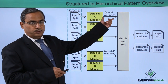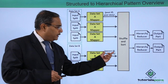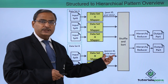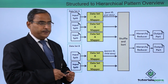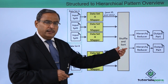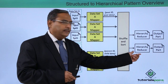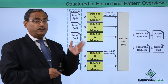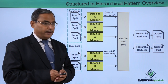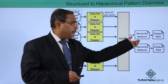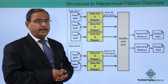The output from the mappers will be in the form of key-value pairs — for example, post ID comma post data, or parent ID comma child data. Then shuffling and sorting will take place, feeding into the hierarchical reducer, which converts the data into the respective hierarchical format. The final output is then obtained.